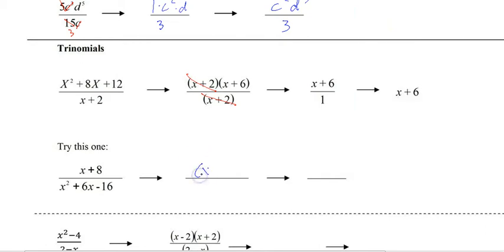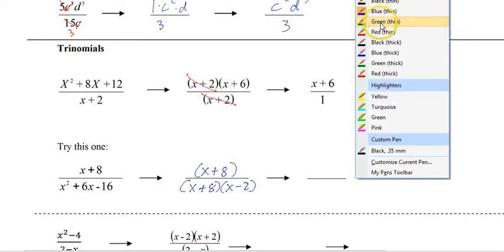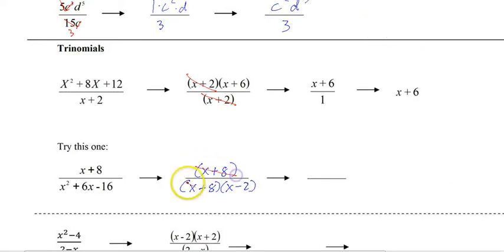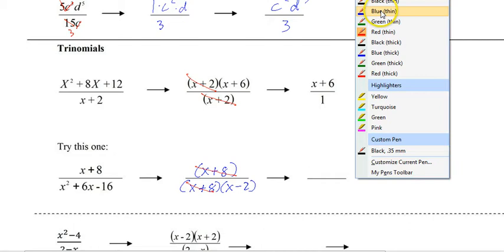So let's try another one. This would be x plus 8 and this bottom one would be x. We know there has to be a plus 8 so we might as well start there, and then an x minus 2, and then we can cancel and write the answer.